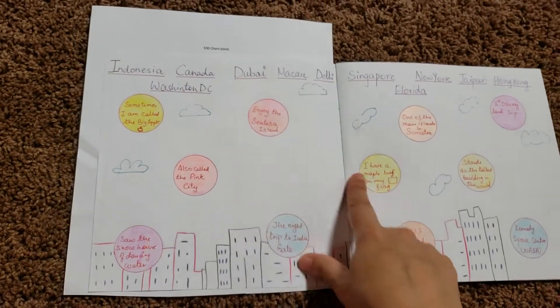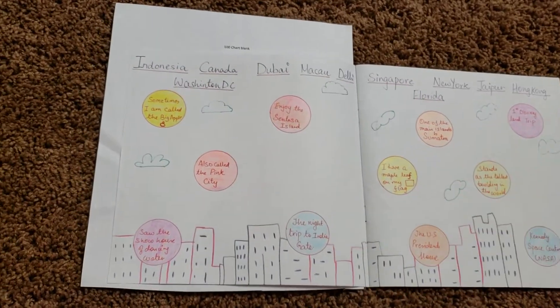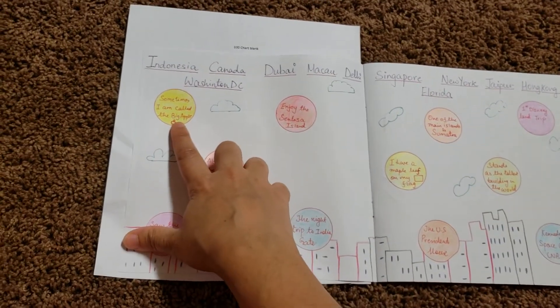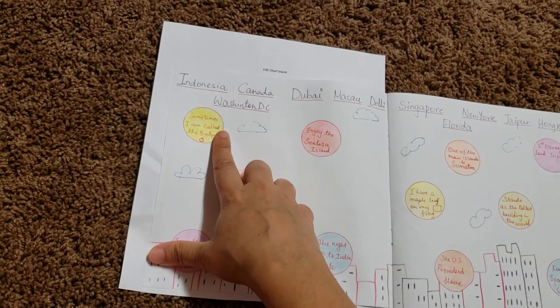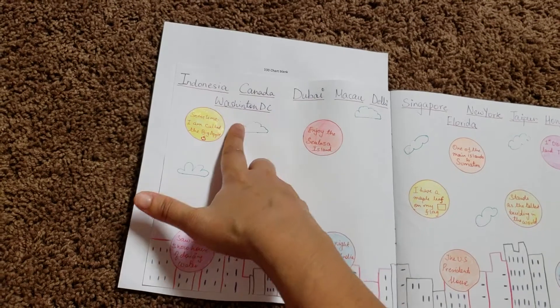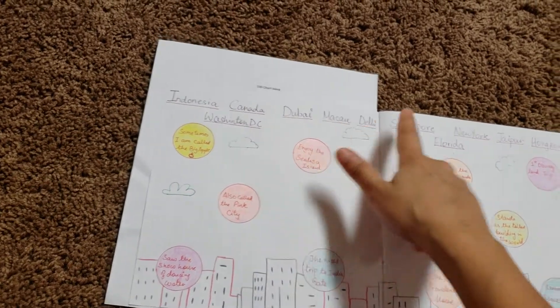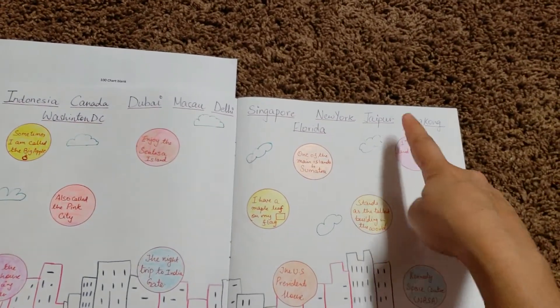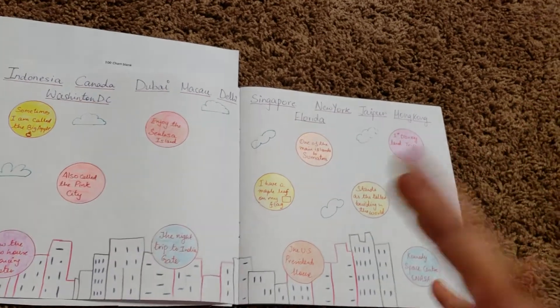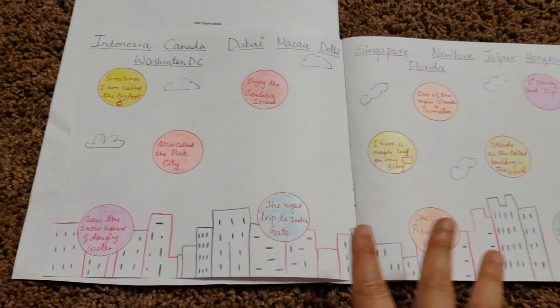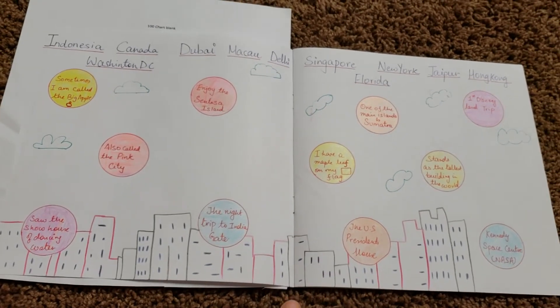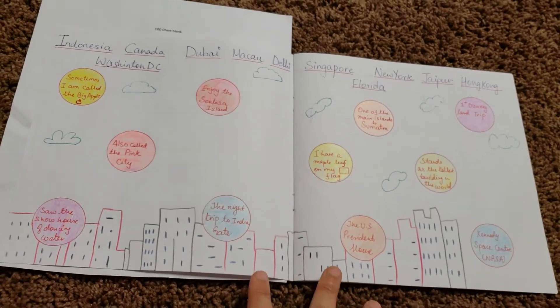So there are a lot of questions here and the answers are all right here. Sometimes I am called the big apple. He needs to figure it out what's called a big apple and your options are Indonesia, Canada, Washington DC, Dubai, Macau, Delhi, Singapore, Florida, New York, Jaipur, Hong Kong. So all my questions are based on the things and the stuff that he has seen and he's gone and then he needs to figure out the answers.